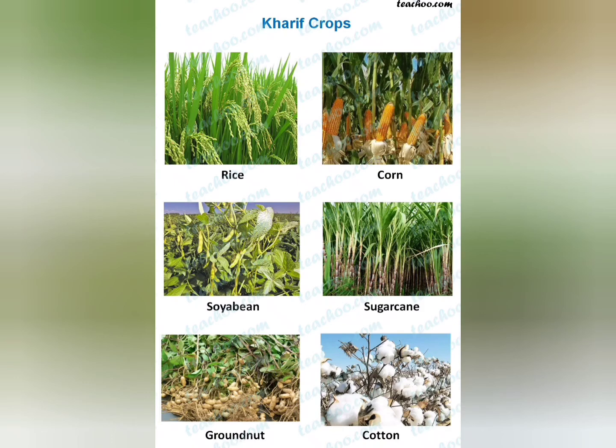As you can see here: rice, corn, soybean, sugarcane, groundnut, cotton — these all are the Kharif crops.